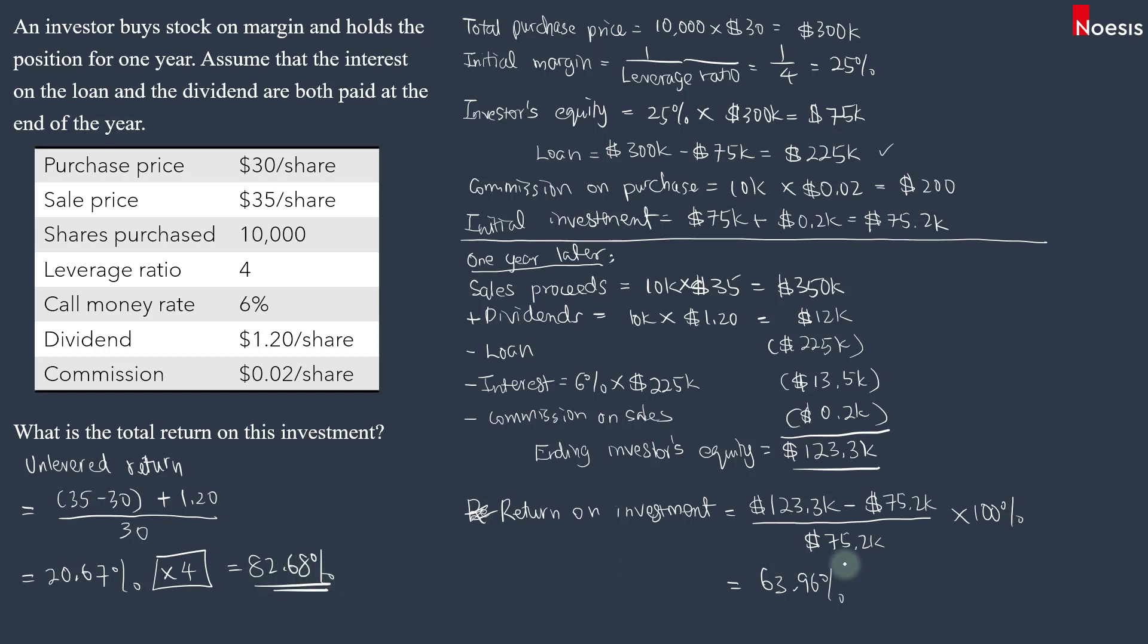And also all the commissions if you factor it in. So that's how we calculate the total return on leverage stock position. A few things to keep in mind is that there will usually be a commission on purchase and commission on sales. So remember, when you factor in commission on purchase, you have to add it to the investor's equity. But at the end, when you factor in the commission on sales, you will have to subtract.